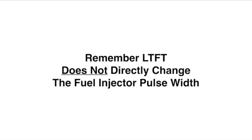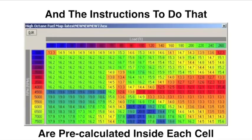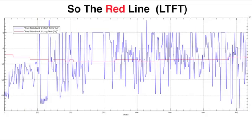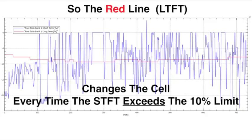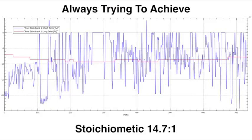Remember, long-term does not directly change the fuel injector pulse width. It changes the strategy to achieve stoichiometric 14.7 to 1. And the instructions to do that are all pre-calculated inside each one of these cell strategies. So, the red line, which is long-term fuel trim, changes the cell every time that the short-term exceeds the 10% limit, either positively or negatively. Always trying to achieve stoichiometric 14.7 to 1.